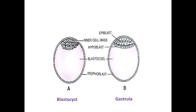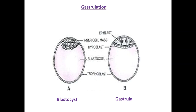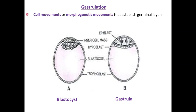Starting now with the next stage of development: gastrulation. In gastrulation, the transformation of the blastocyst into the gastrula takes place. Gastrulation is the process by which the blastocyst forms the gastrula. Gastrulation involves cell movements, or morphogenetic movements, to form the germinal layers.